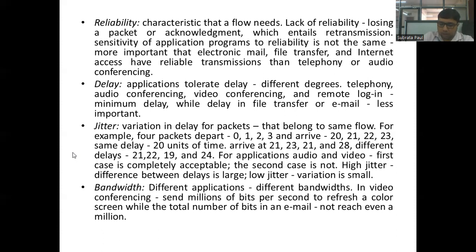Next, we come to the next factor, that is jitter. This characteristic defines the variation in the delay of packets that correspond to the same flow. In the example, we take into consideration four different packets which depart from the source node at times 0, 1, 2, and 3, while arriving at the destination node at 20, 21, 22, and 23 — meaning each of the four packets has a delay of 20 units of time. But if the packets arrive at 21, 23, 21, and 28 seconds respectively, there are different delays in each of those four packets.